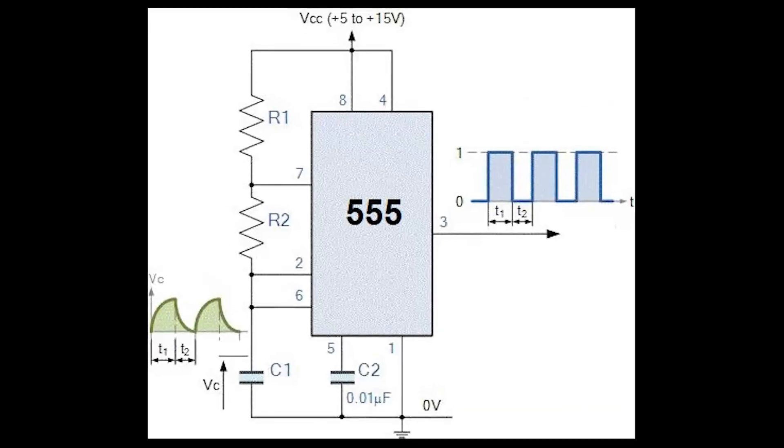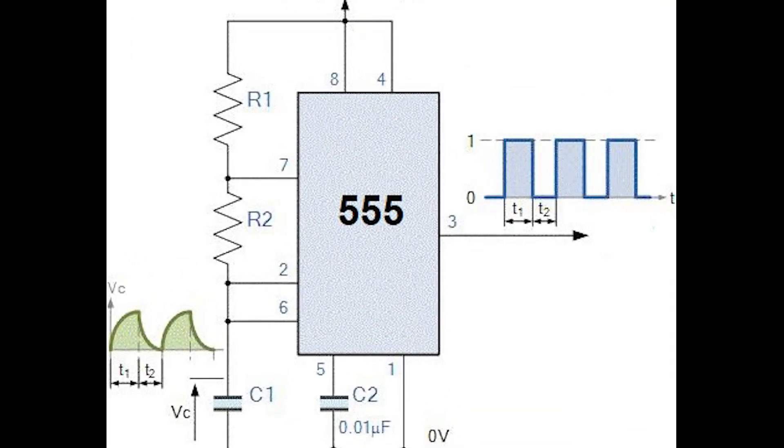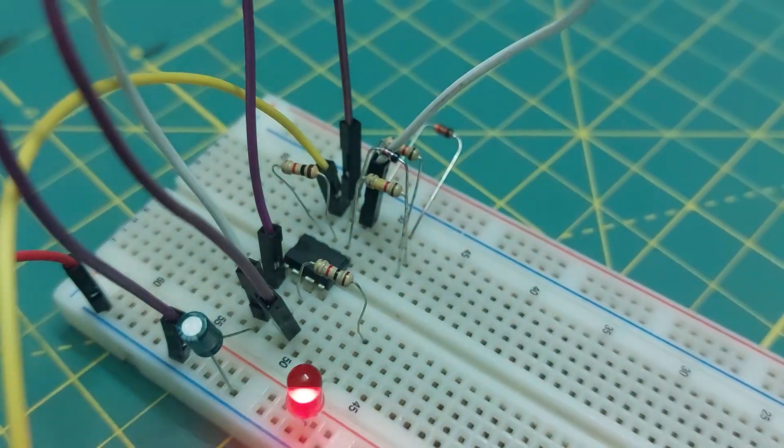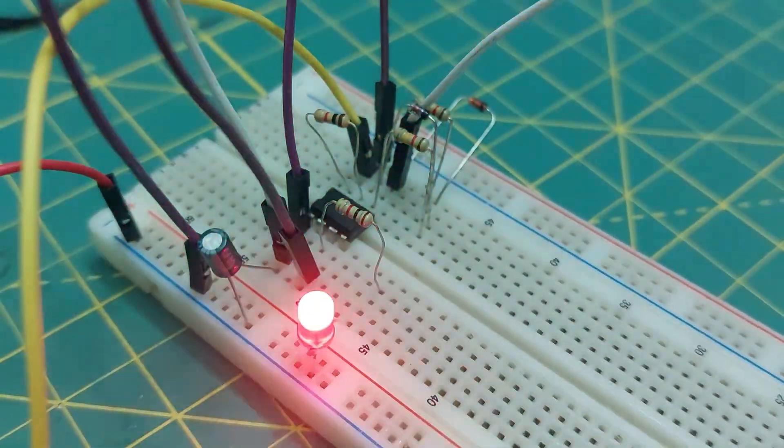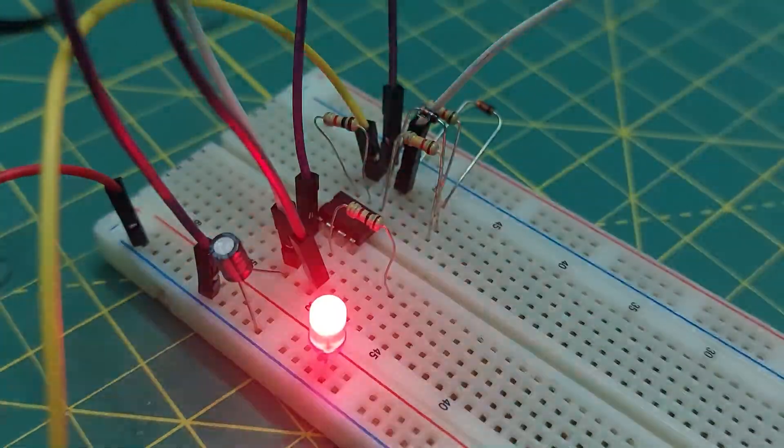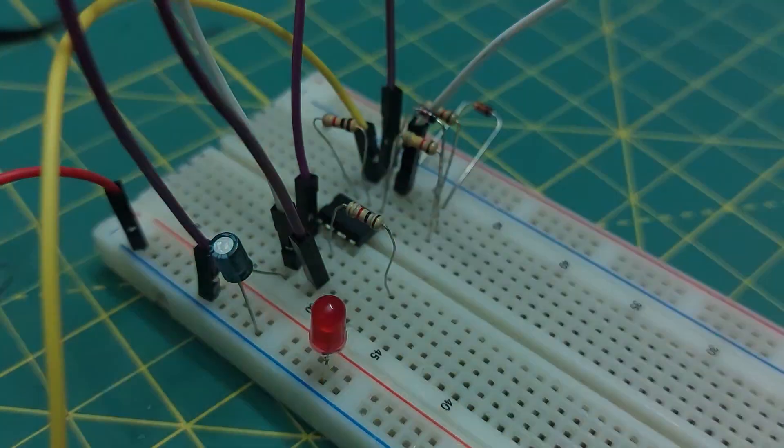You can build this circuit in other ways too, but the frequency might not be as accurate. This is the basic and most essential 555 timer circuit that everyone should know. It's called the A-Stable Timer Configuration.